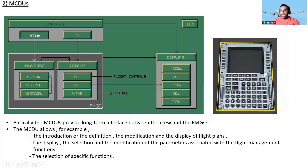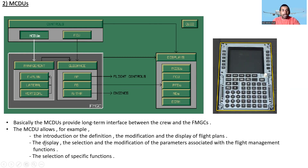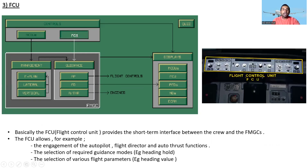Now we're going to the MCDU section. The MCDU provides long-term interface between the crew and the FMGCs. The MCDU allows for example the introduction, definition, modification, and display of flight plans, and the display, selection, and modification of parameters associated with flight management functions, and the selection of specific functions.